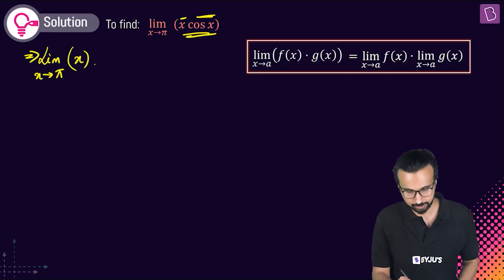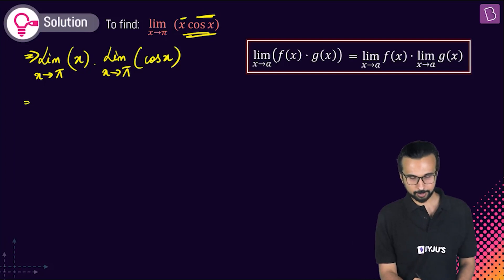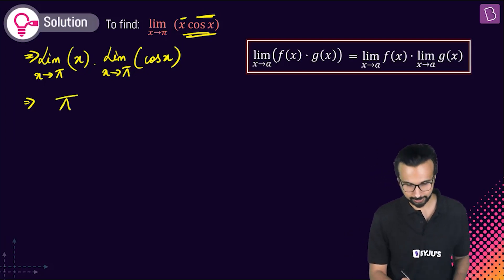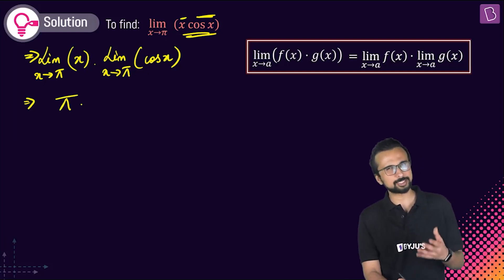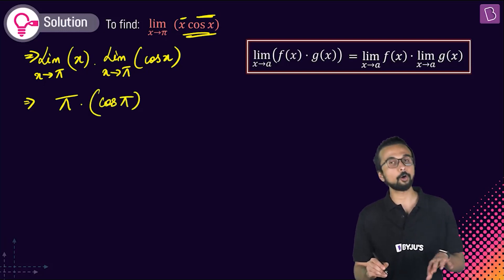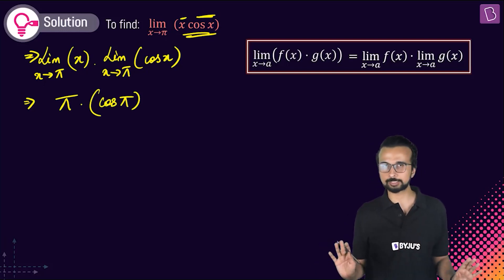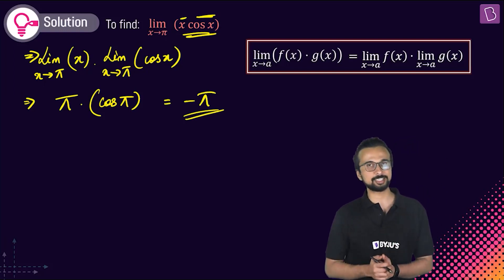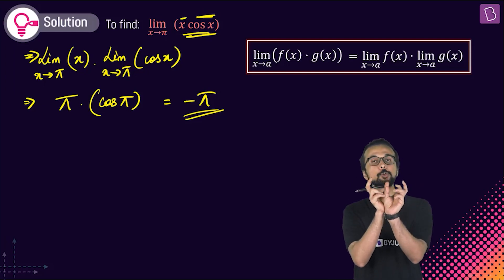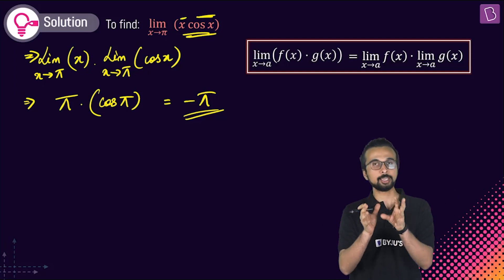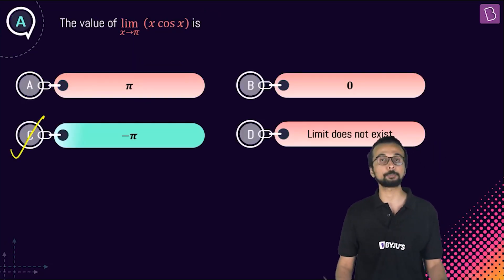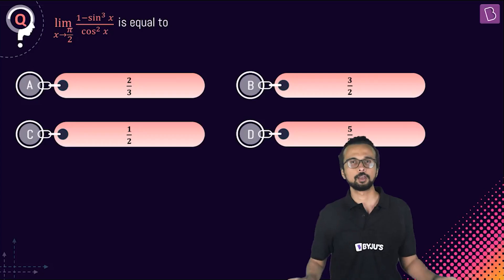Applying this: limit x→π of x·cos(x) = (limit x→π of x) × (limit x→π of cos x) = π × cos(π) = π × (-1) = -π. There's no indeterminate form here, so direct substitution works fine. Final answer: option C, -π.